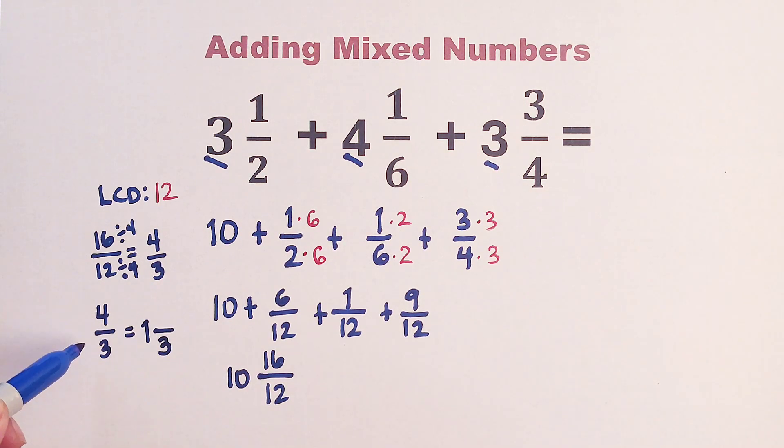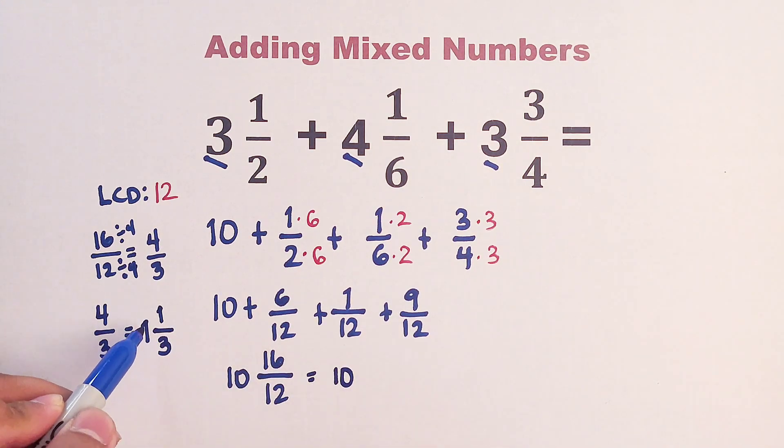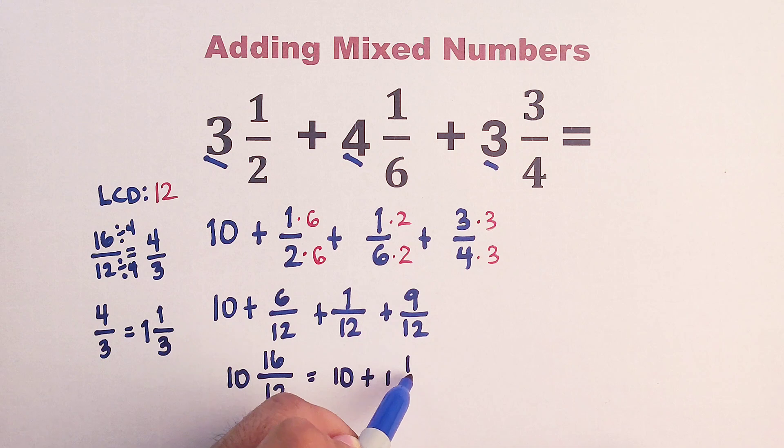And then we will copy the denominator, which is 3. And then subtract 4, subtract the numerator and the denominator. 4 minus 3, that is equal to 1. Meaning, this is copy 10. And the 16 over 12, it became 1 plus 1 and 1 third.